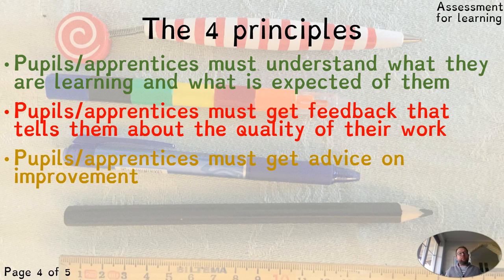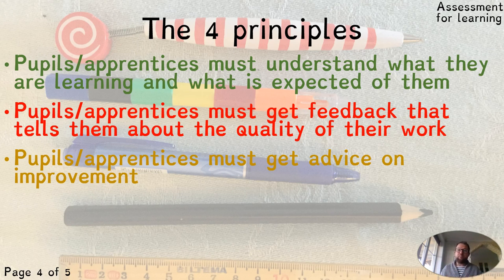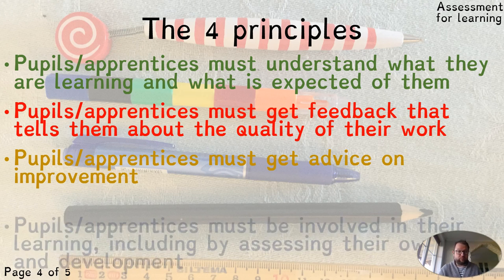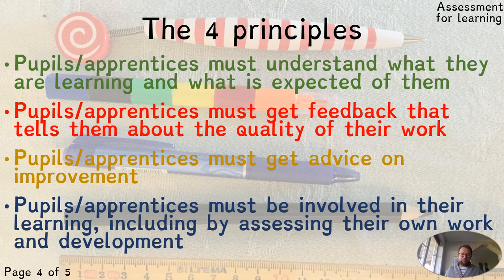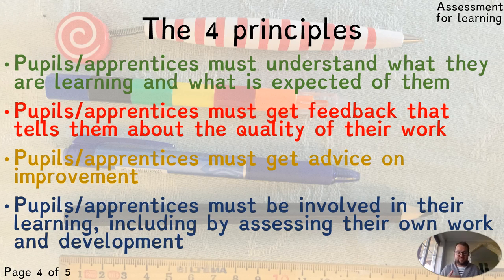Third, pupils and apprentices must get advice on improvement — they need to know how far they've got and what the natural next step is. For example: 'I see you've managed good paragraphs; perhaps you need to be adding good quotations.' Fourth, they must be involved in their own learning — this is the assessment role being taken over by pupils, assessing their own work and development. Once they understand what is expected of them, they should be able to assess their own work and say: 'I like what I did there; I think I need to improve this bit and get rid of that aspect there.'